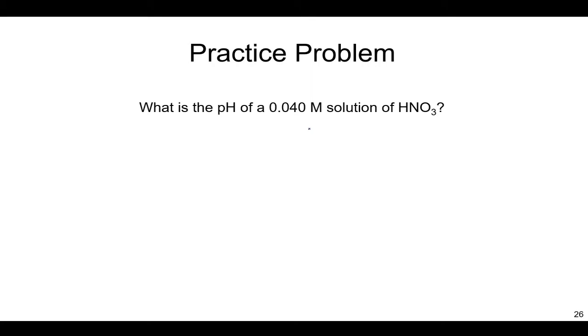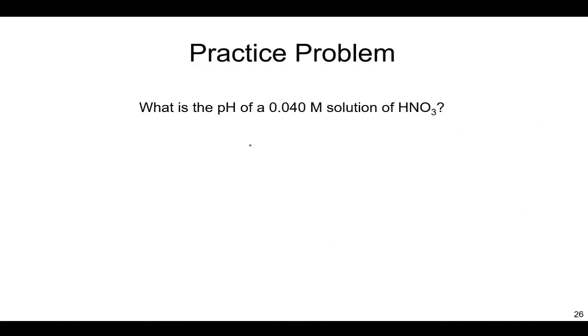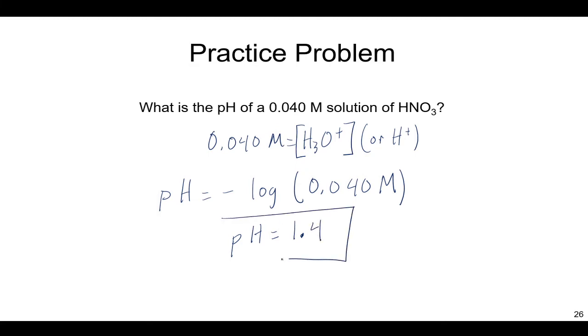So since HNO3 is one of these seven strong acids, here it is right here, then we know we can use this convenient shortcut, that to get the pH of this concentration of H3O+, well that's the same as saying there's 0.040 molar of H3O+. And so to get the pH, the pH is just negative log of that value, 0.040, since that is the H3O+ concentration. So negative log of 0.04 comes out to a pH of 1.4. And that's all there is to it, simple.